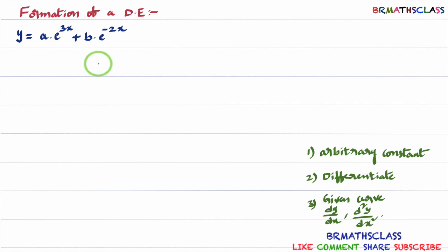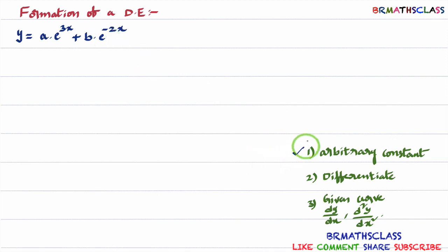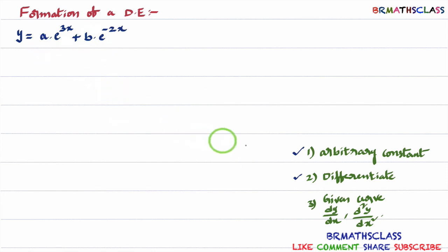To form a differential equation, you need to remember three points. First, by seeing the equation, you need to identify how many arbitrary constants are present. Once you identify the number of arbitrary constants, you differentiate that many times. In the process of differentiation, we will try to eliminate the arbitrary constants. After differentiation, if arbitrary constants are eliminated, it is well and good. Otherwise, we will go to the third step.